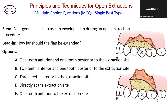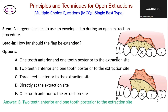The answer is B — an envelope flap extended two teeth anterior and one tooth posterior to the tooth to be removed is sufficient for most situations.